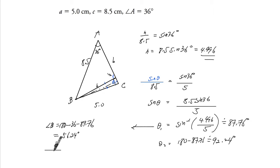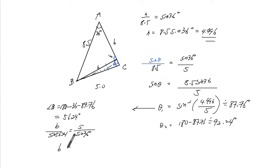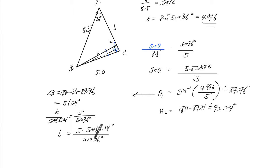So B over sine of 56.24 will have to equal 5 over sine of 36, so B is equal to 5 multiplied by this sine of 56.24, all over sine of 36. 7.07 for the length of B.